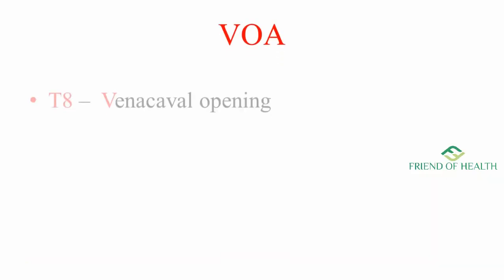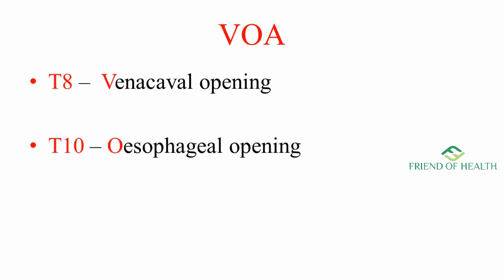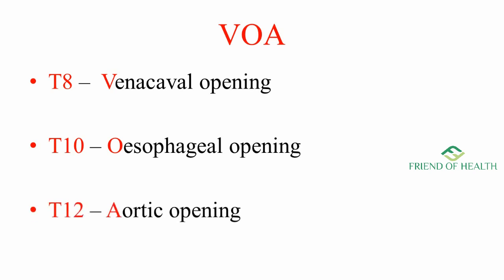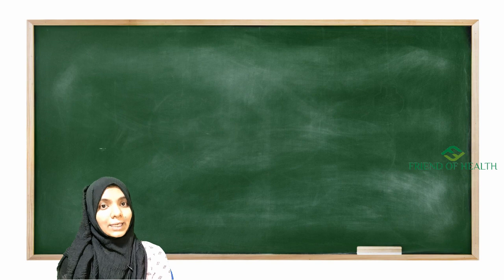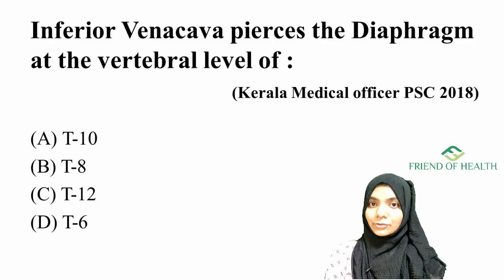This helps you remember T8, T10, and T12 levels. Notice the pattern: T8 plus 2 gives T10, and T10 plus 2 gives T12. So V-O-A — that is the mnemonic for the large openings of the diaphragm.